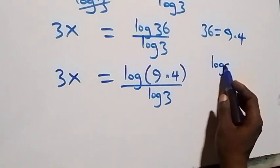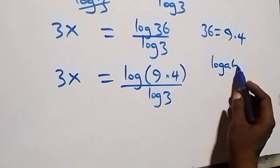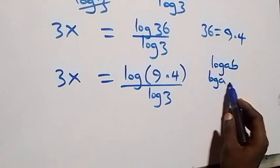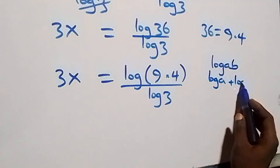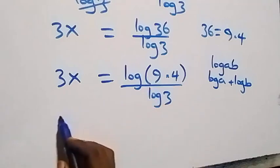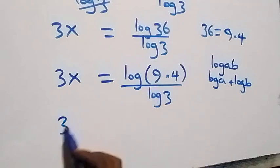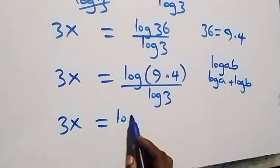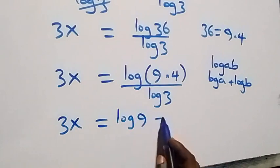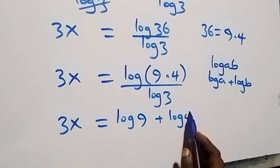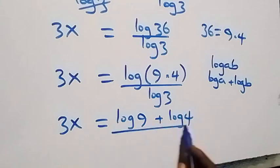Now we apply the logarithm product rule: log of a times b is the same as log a plus log b. So here we have 3x equals log 9 plus log 4, all over log 3.